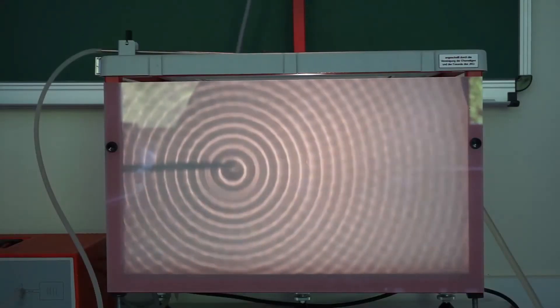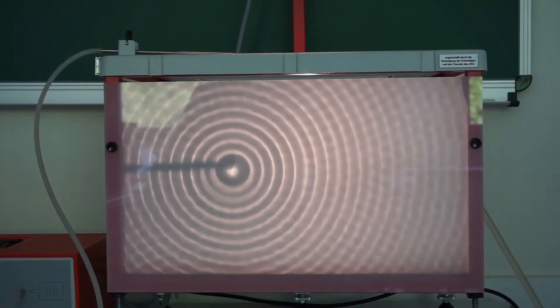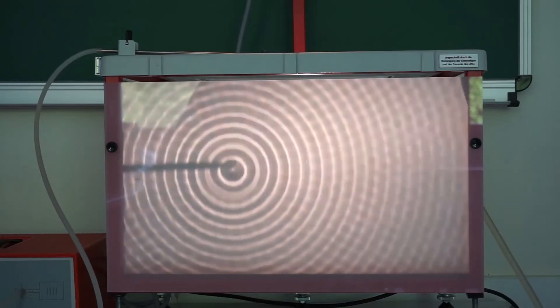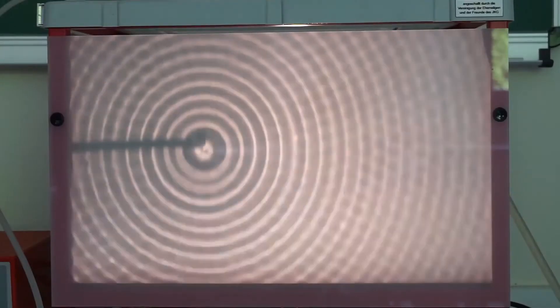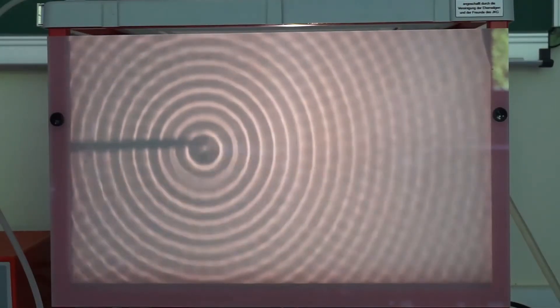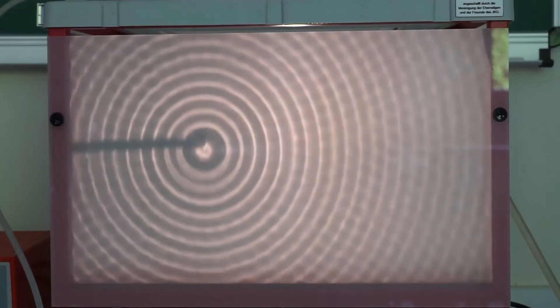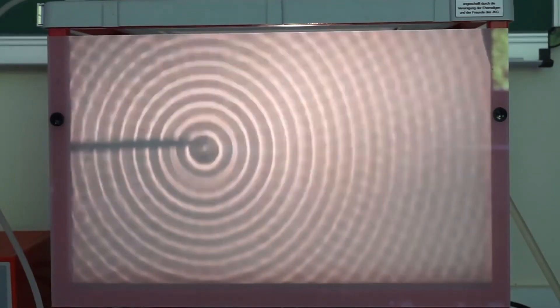Und jetzt schalte ich noch das Stroboskop ein und bei der richtigen Frequenz bekommen wir dann tatsächlich ein stehendes Bild. Und sensitive Zuschauerinnen und Zuschauer, die vielleicht sogar Epilepsie haben, sollten jetzt dringend abschalten und sich das nicht antun. Es wandert ein bisschen, das heißt, ich habe die Frequenz nicht ganz getroffen, aber da machen wir es nicht ewig rum. Also das, punktförmige Quelle.